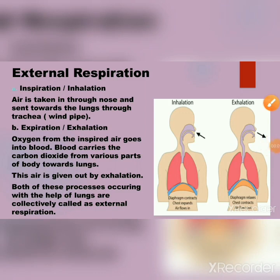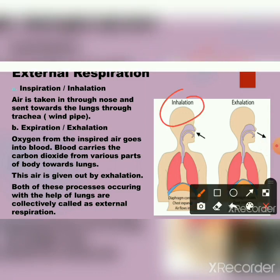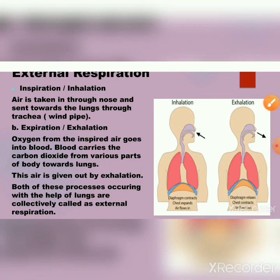External respiration — with the figure we can see inhalation, where the person is taking in oxygen through the nose, and in exhalation, giving out carbon dioxide. During inhalation, air is taken through the nose and sent towards the lungs through the trachea, that is the windpipe. During expiration or exhalation, oxygen from the inspired air goes into the blood, and blood carries carbon dioxide from various parts of the body towards the lungs.